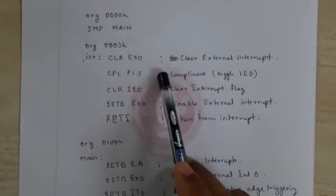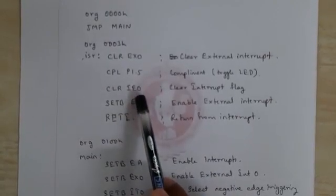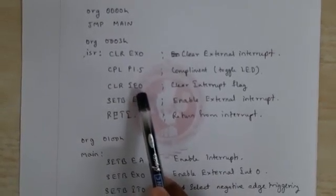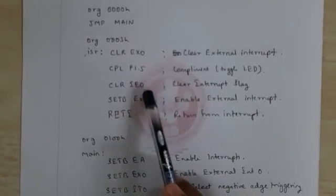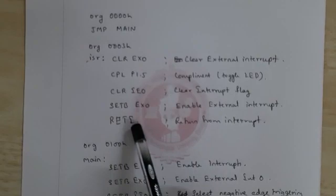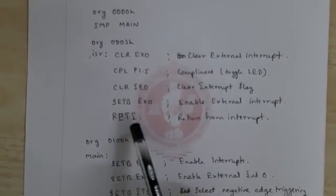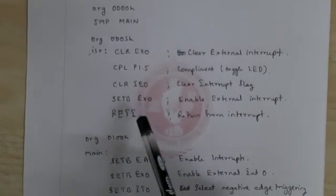We clear the interrupt flag so we can accept interrupts again, then enable the interrupt and return to the main program using RETI (return from interrupt). After this, it will go back to jump loop.